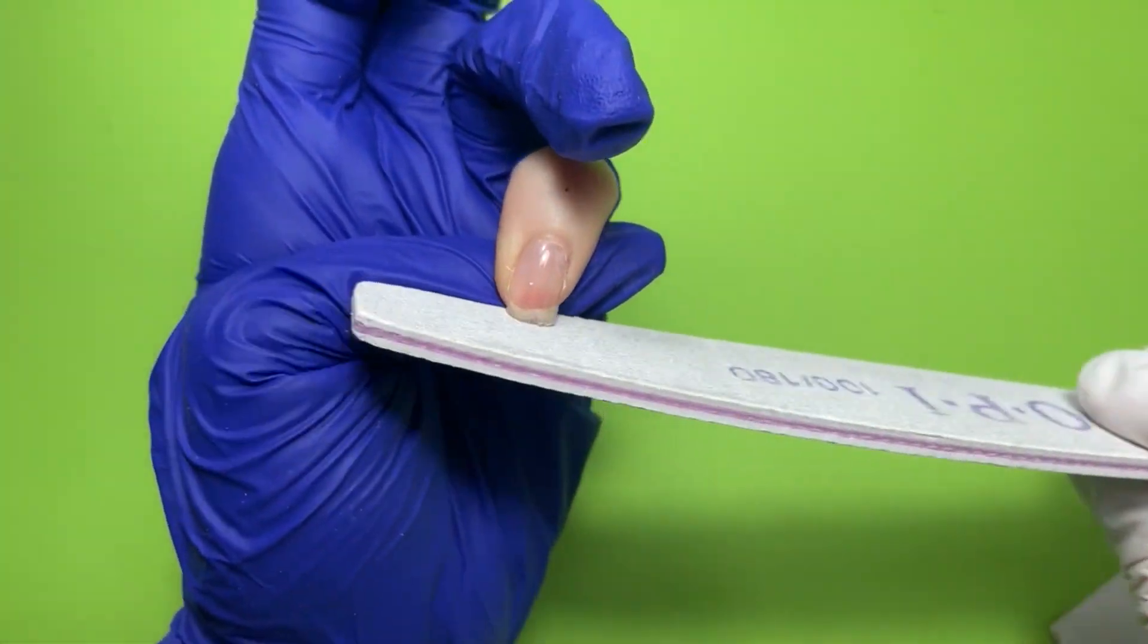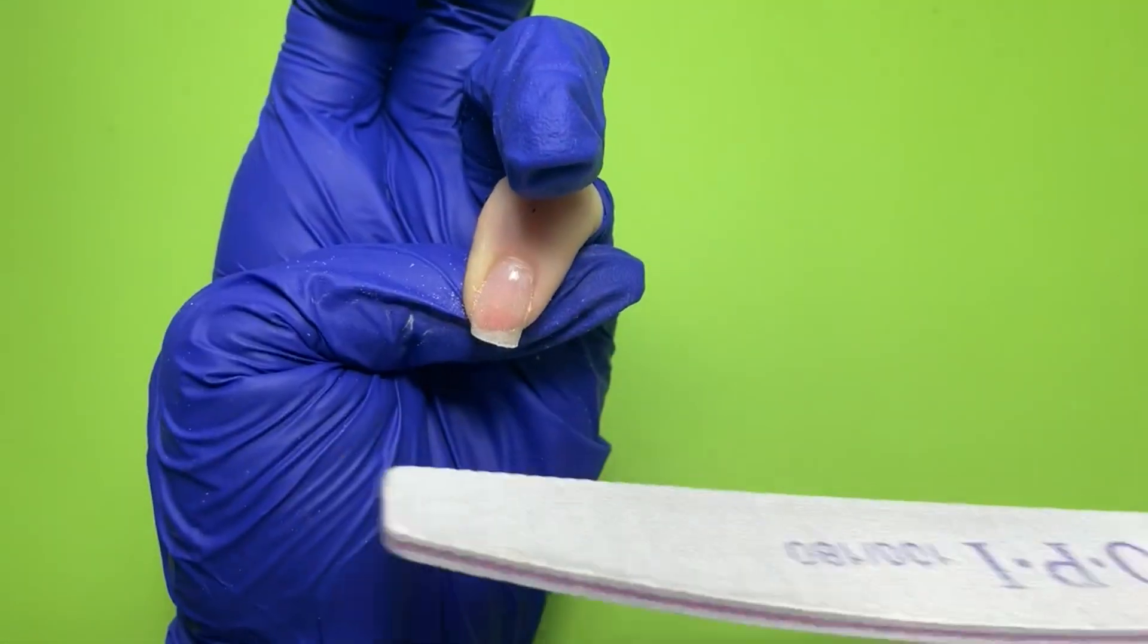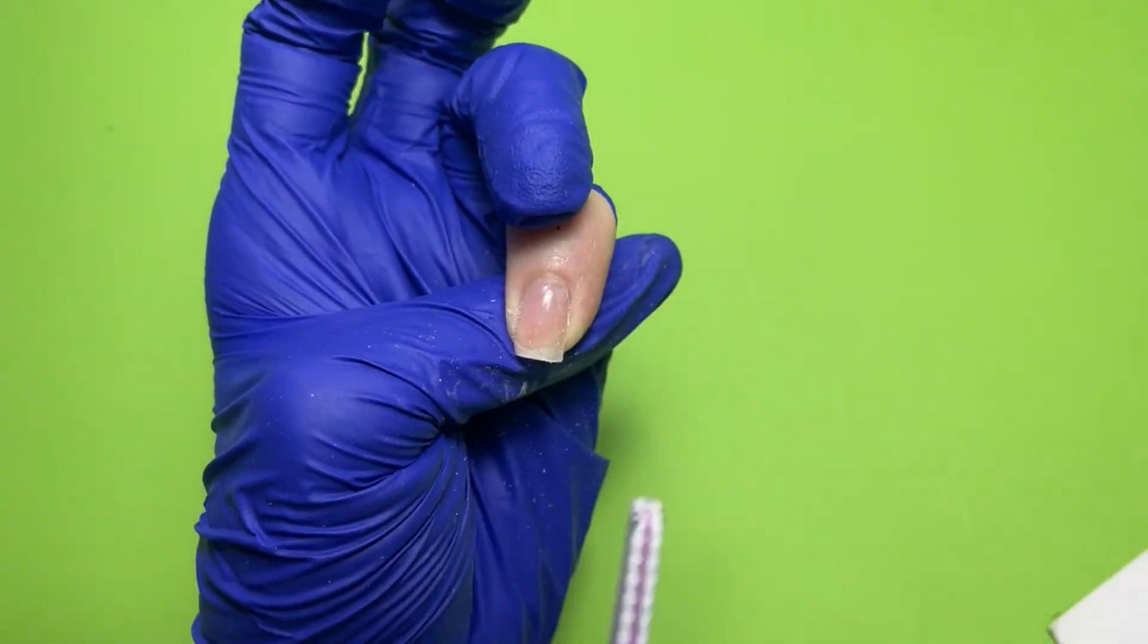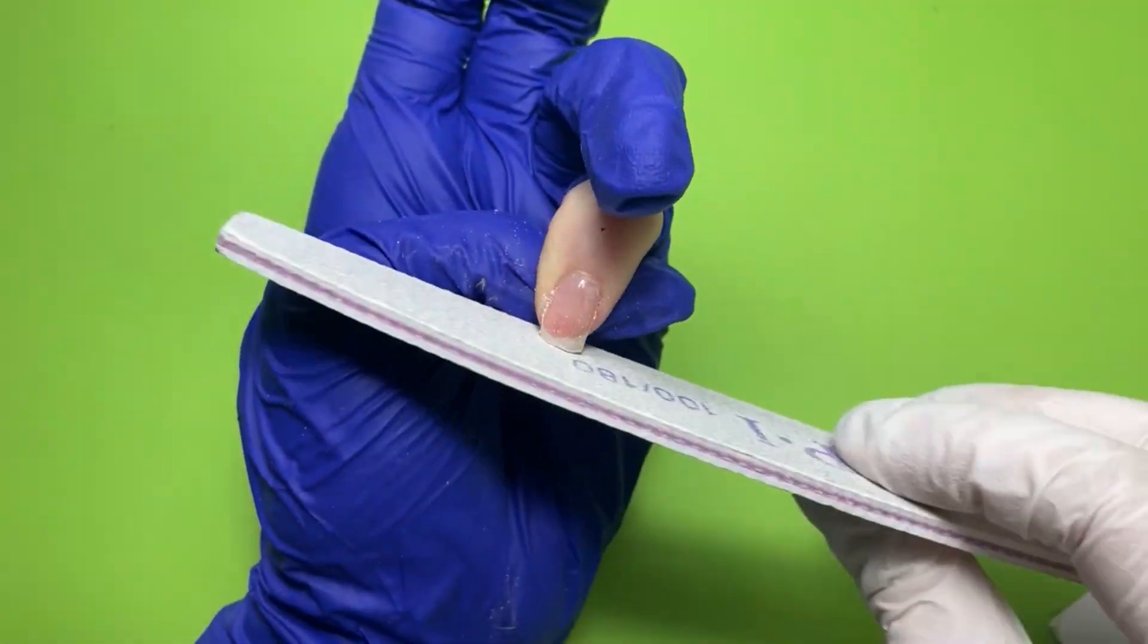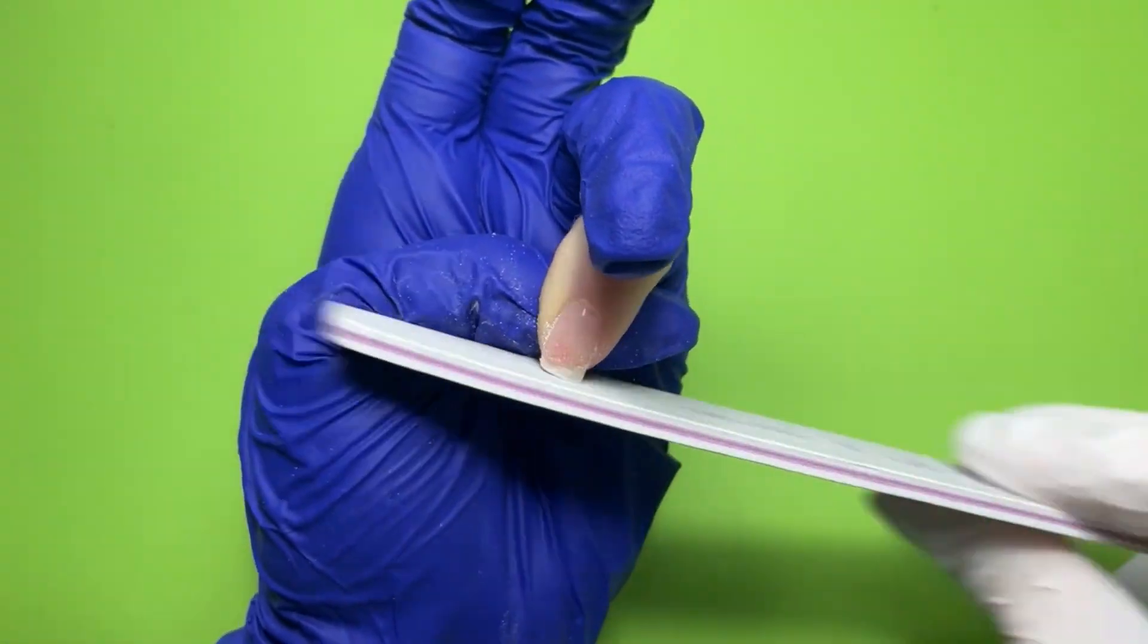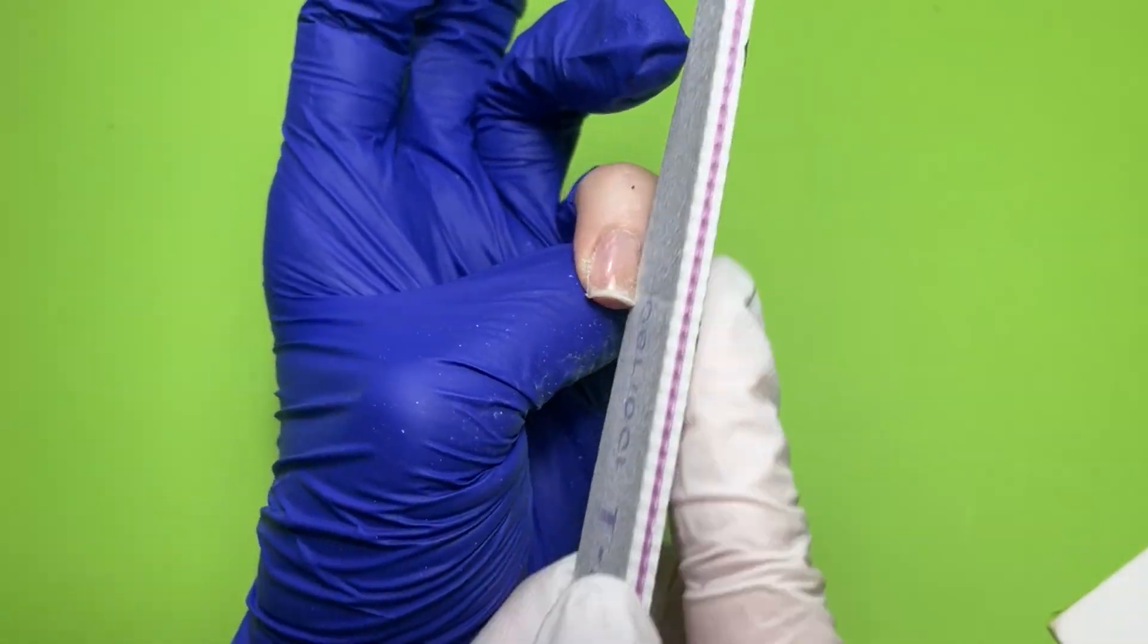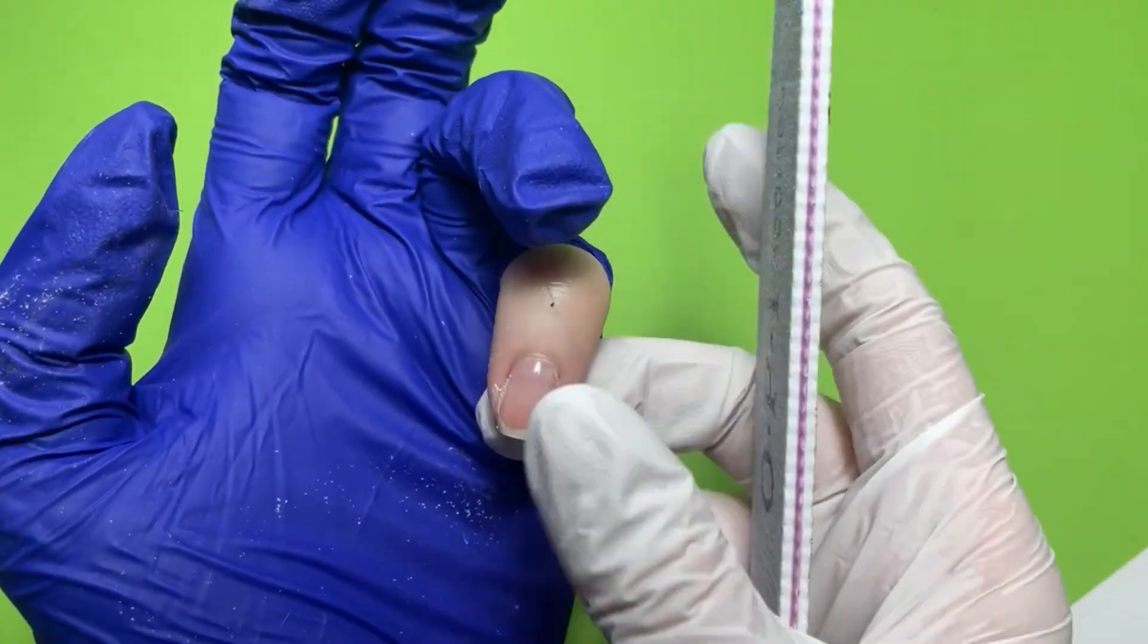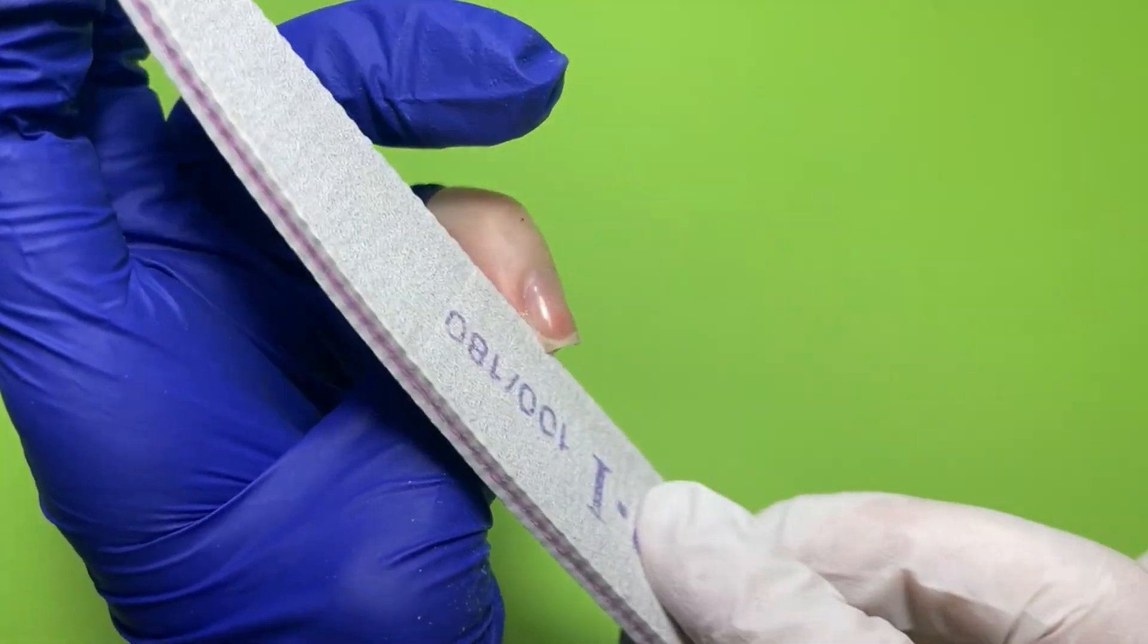And we need to shape our nail as we want. I will do a square nail, and it will be a soft square.